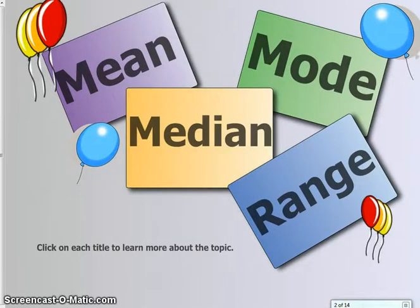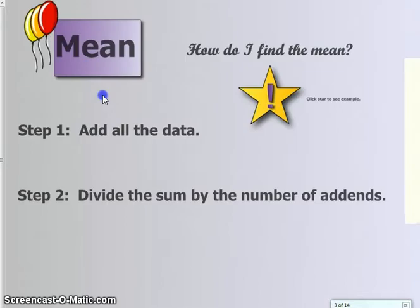We're going to start off today by looking at mean. Mean, how do I find the mean? Step 1, add all the data. Step 2, divide the sum by the number of addends.